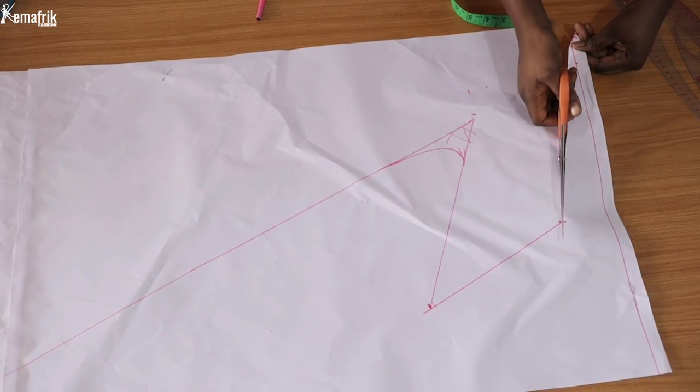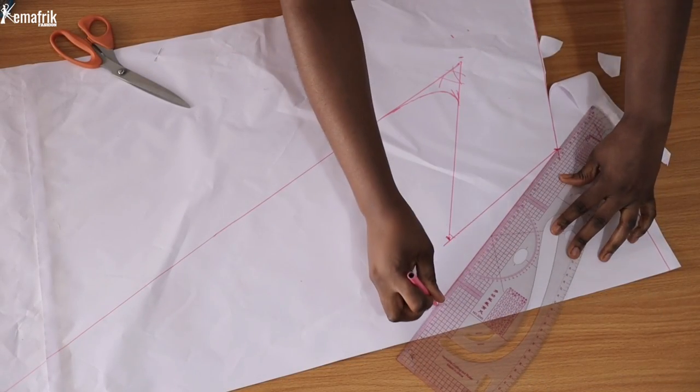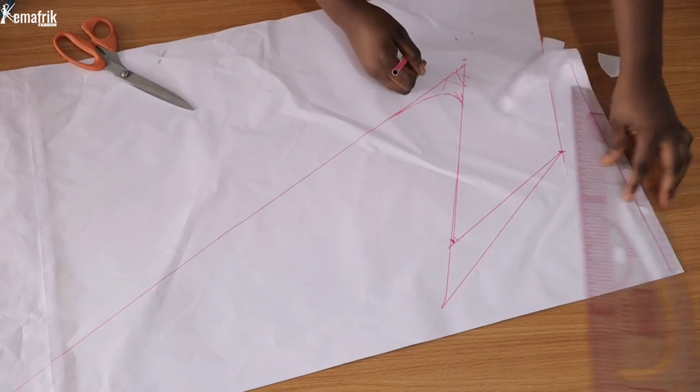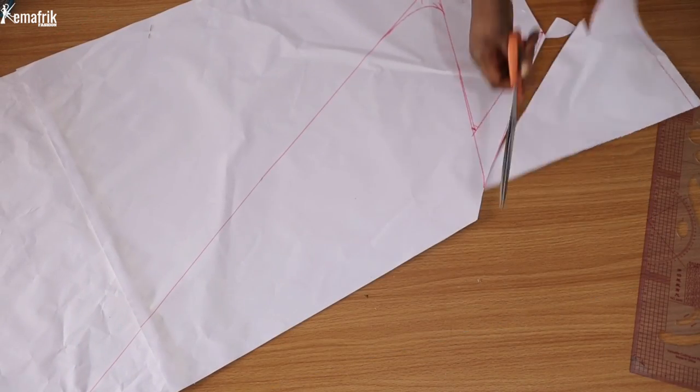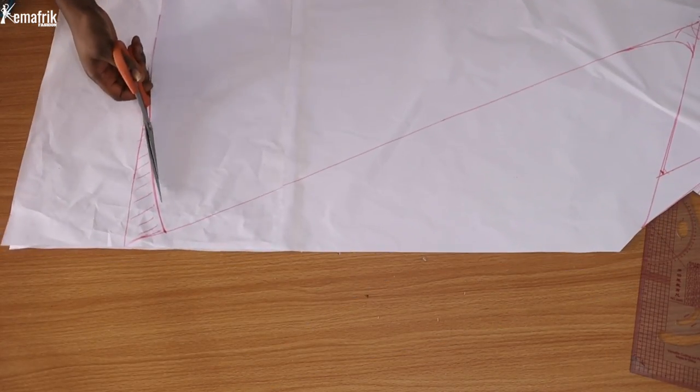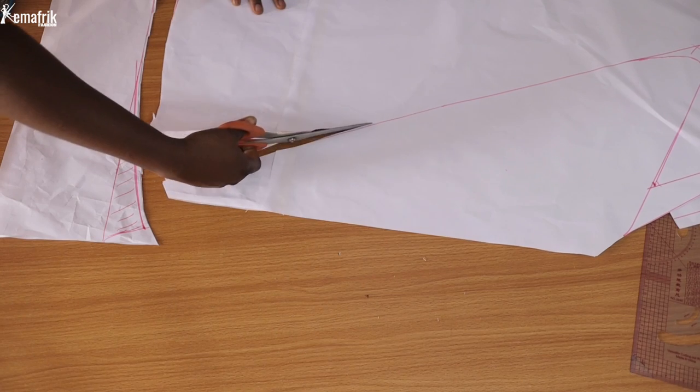After this was done I went ahead to cut out the pattern. At this point I decided to slant this sleeve hem again, but even while I was sewing I went back to this original sleeve hem.